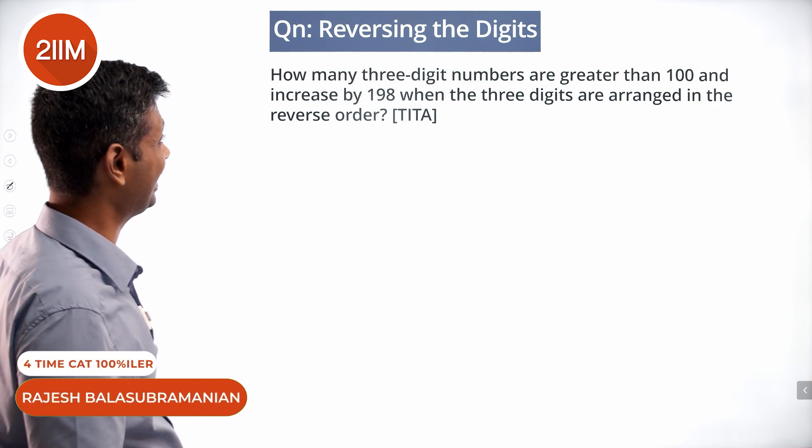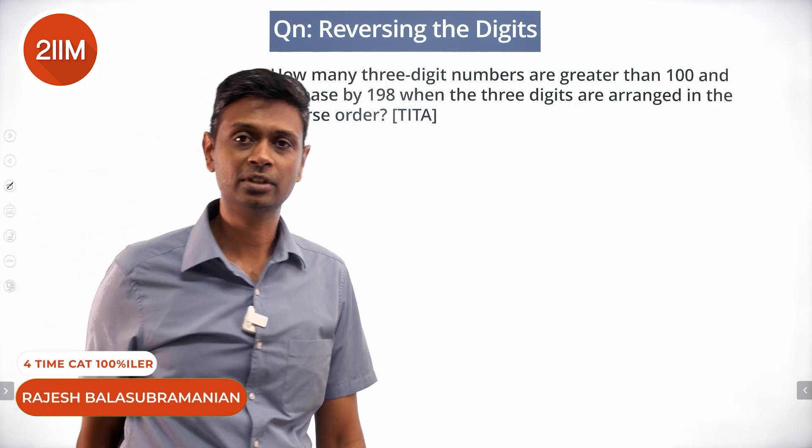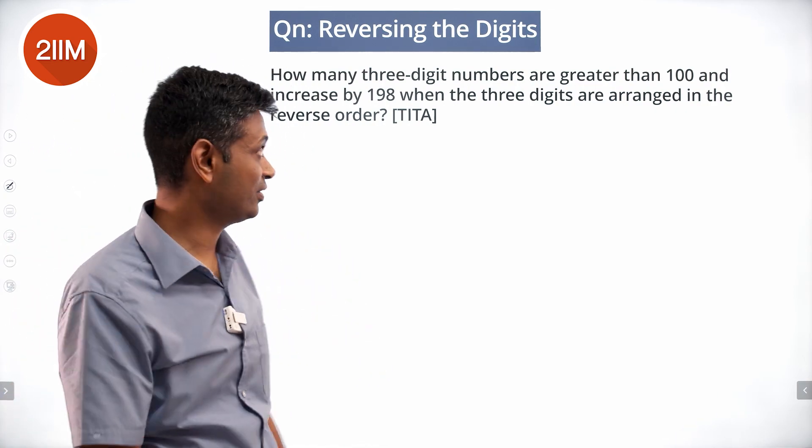How many three-digit numbers are greater than 100? All three-digit numbers are 100 or more, so only 100 is ambiguous.